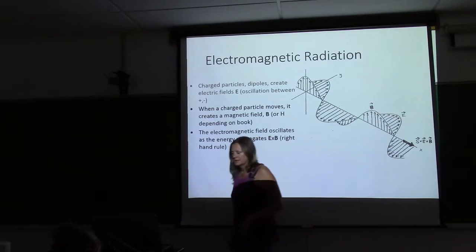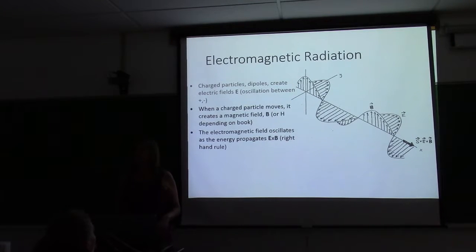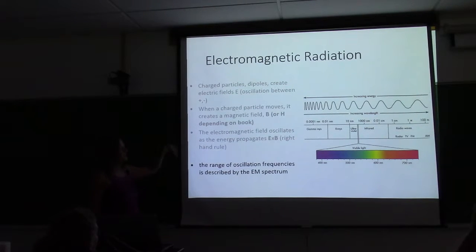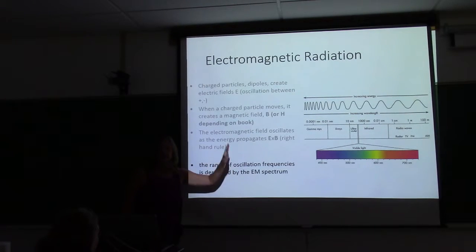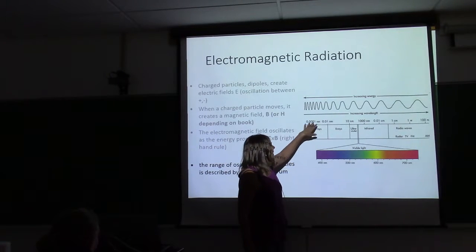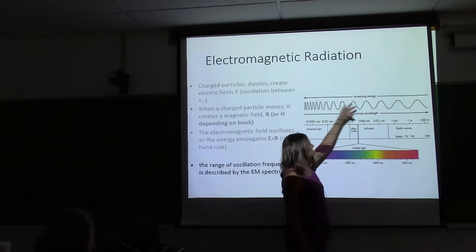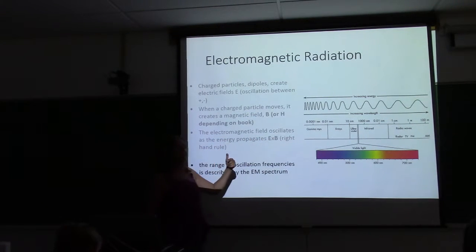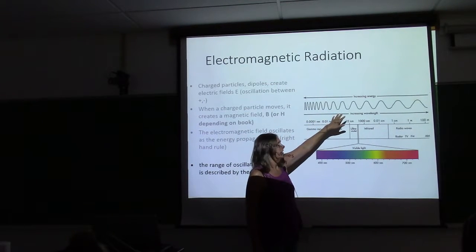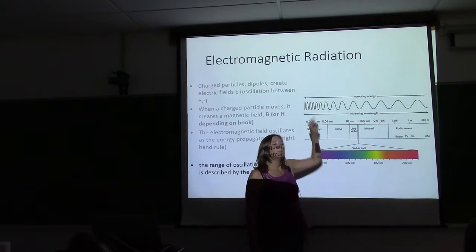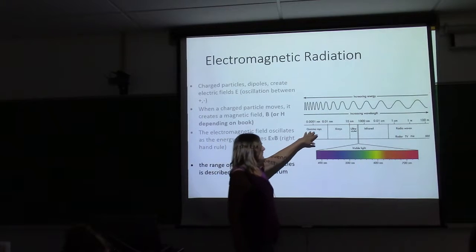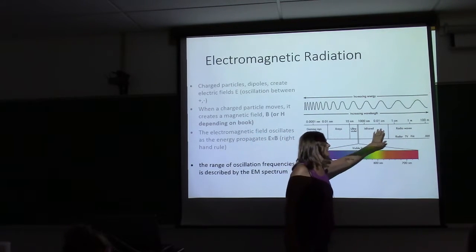The magnetic field will oscillate as this energy is propagating — that's the right-hand rule. The energy is propagating this way, with the magnetic field in this direction and the electric field going in this direction. When we talk about polarization, the alignment of this will become important — we'll get to polarization later. The range of frequencies we see in that oscillation is described by the electromagnetic spectrum, with wavelength going from short to long. We remember from yesterday that energy associated with each frequency is dependent upon the wavelength — the shorter the wavelength, the more energy in each photon.